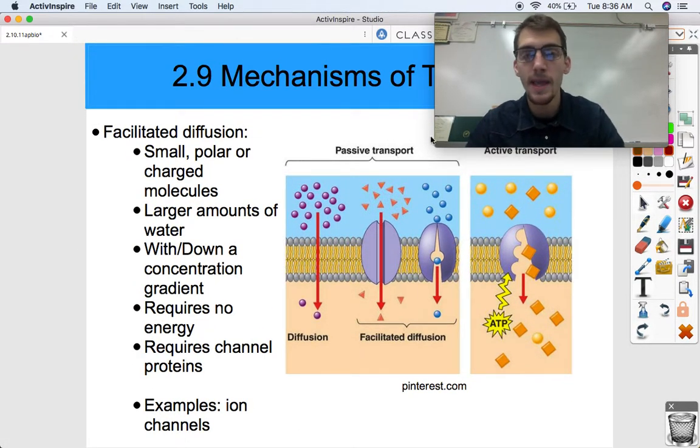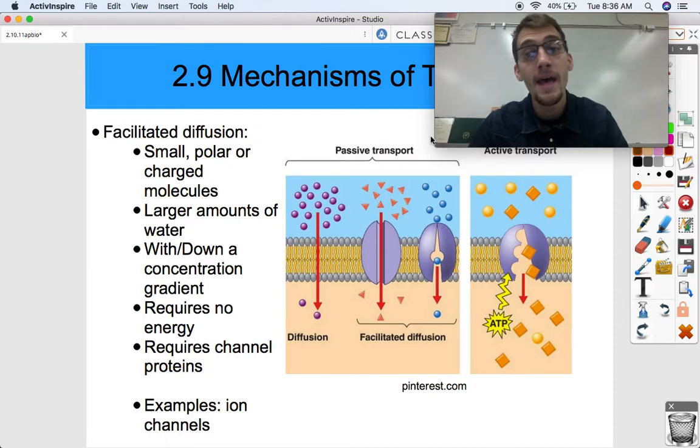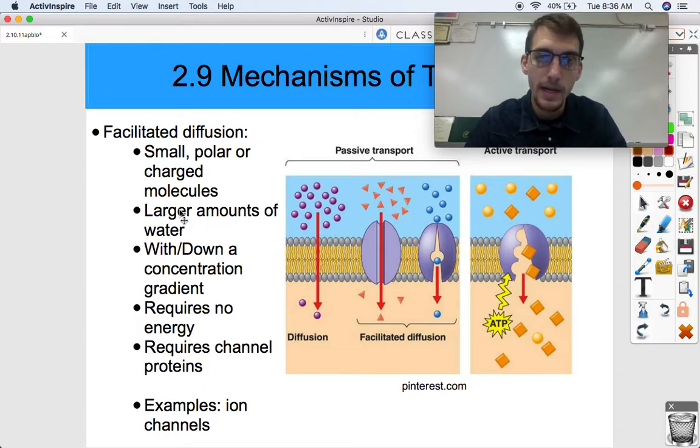Either of those normally can't pass through the lipid bilayer, so they need help. They need some kind of membrane protein, a channel protein or a carrier protein to get through. Larger amounts of water through aquaporins are able to pass through because it's not always let through the bilayer. And again, we're going with the concentration gradient or sometimes referred to as down the concentration gradient. And again, requires no energy but it does require membrane proteins.